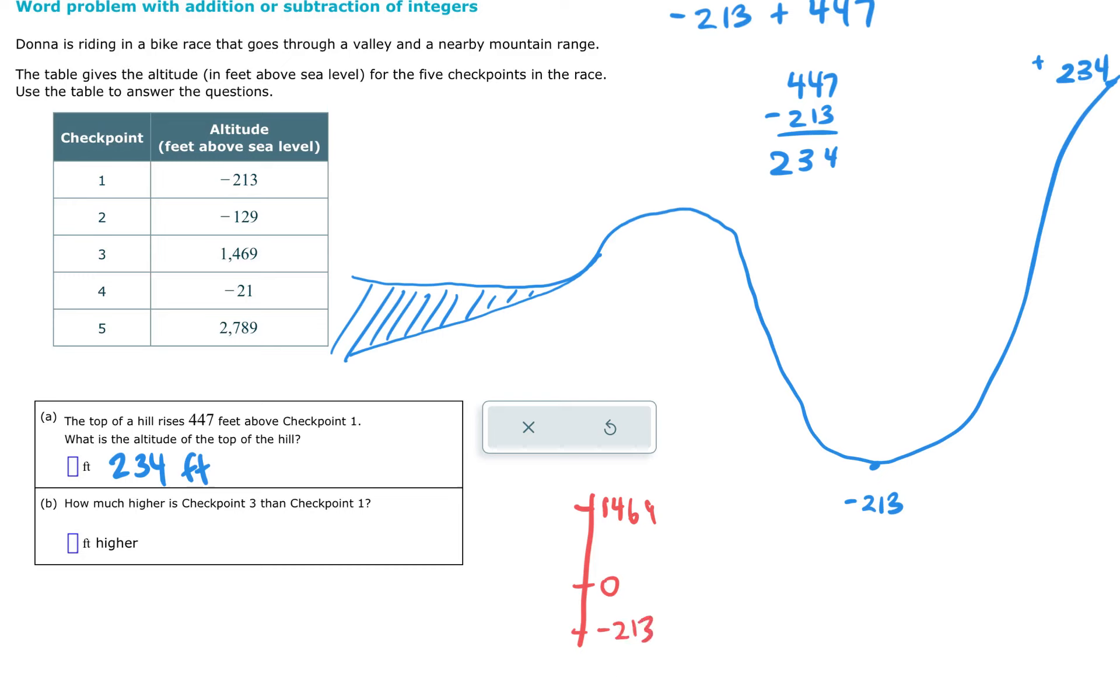We're just trying to find out how far apart is this one and this one, checkpoint one and checkpoint three. From here to here, we're 213 feet. From here to here, we're 1,469 feet. We just need to add those up: 1,469 and 213, and it looks like we get 1,682 feet.